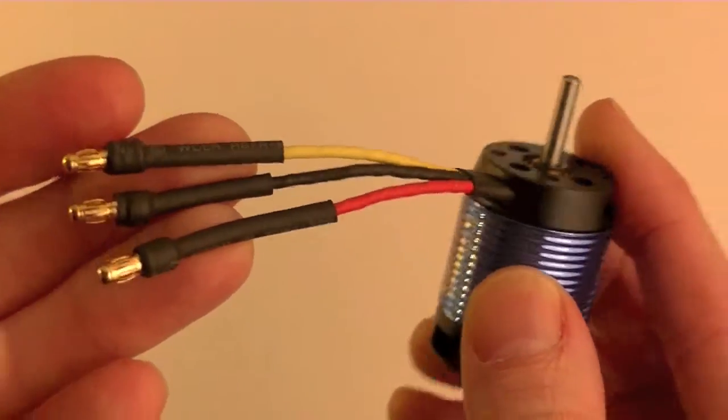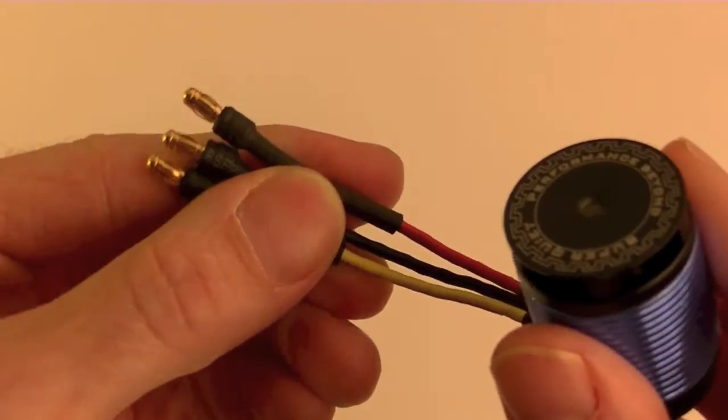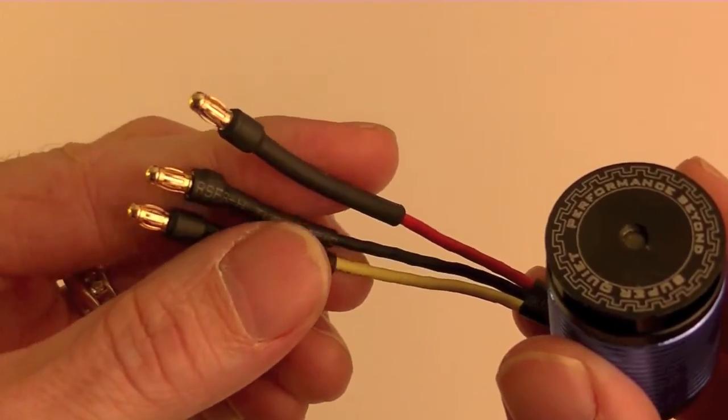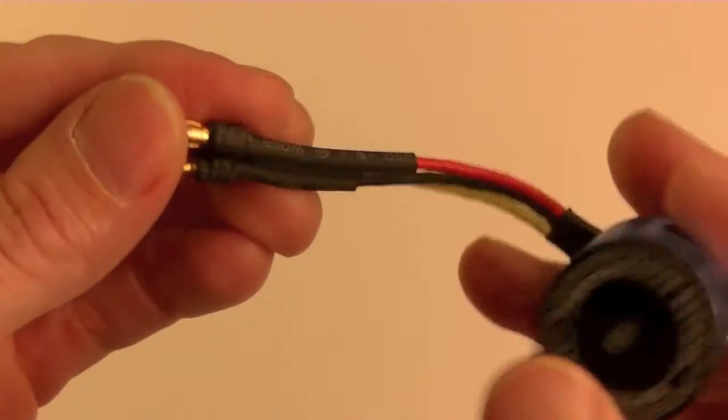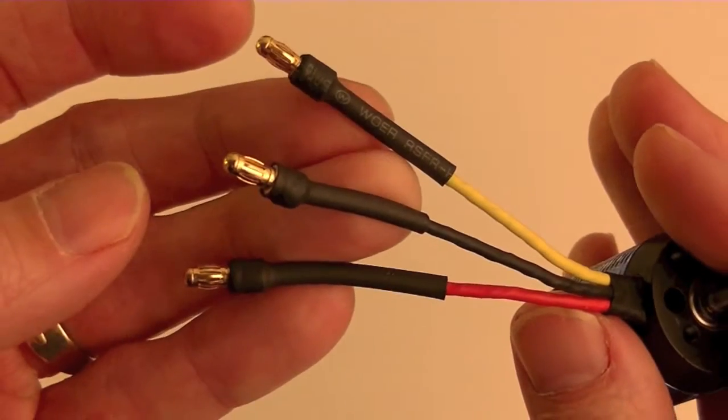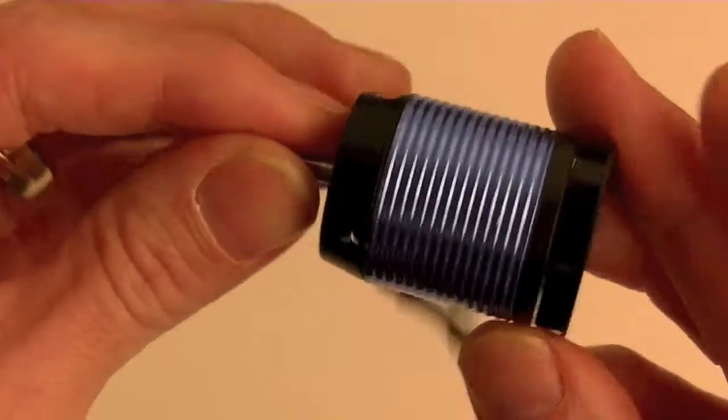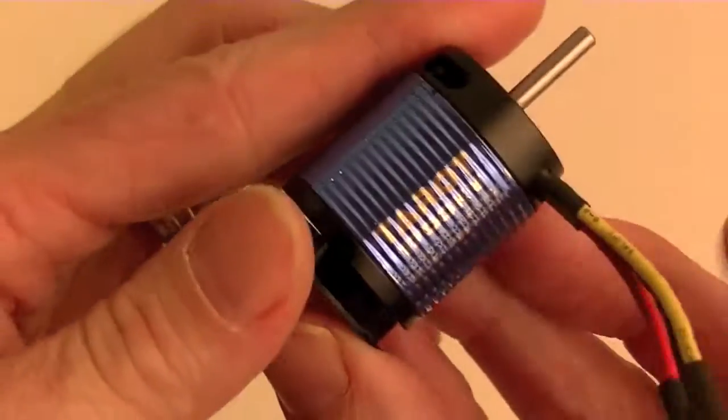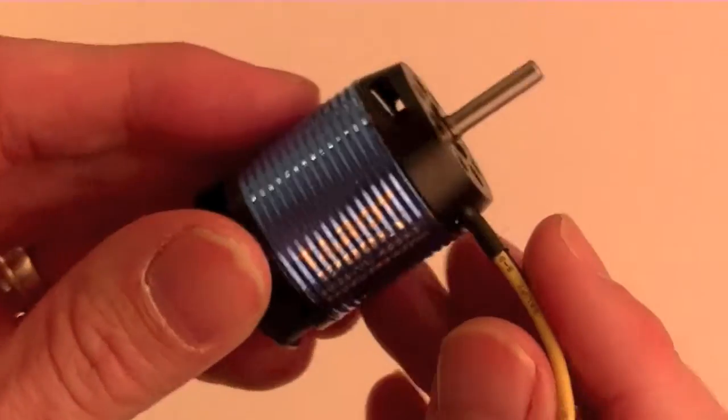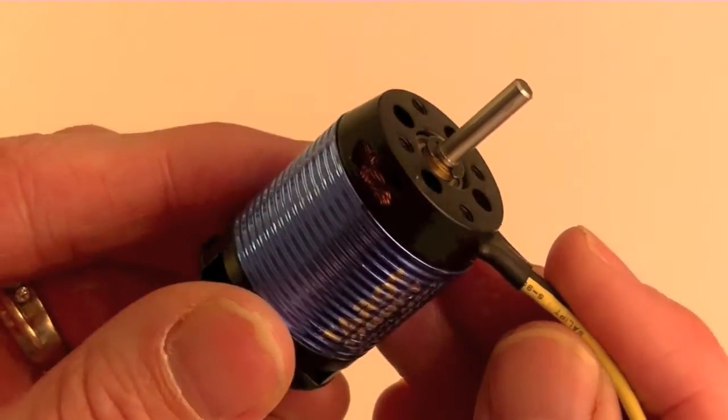So here's my motor with the bullets put on. These are 3.5mm bullets, kind of standard motor size bullets, and this is the shrink tubing that was in the box. I've got my motor end soldered on. Now, real quick, just want to make sure you have some important information about this, should you need to know it.